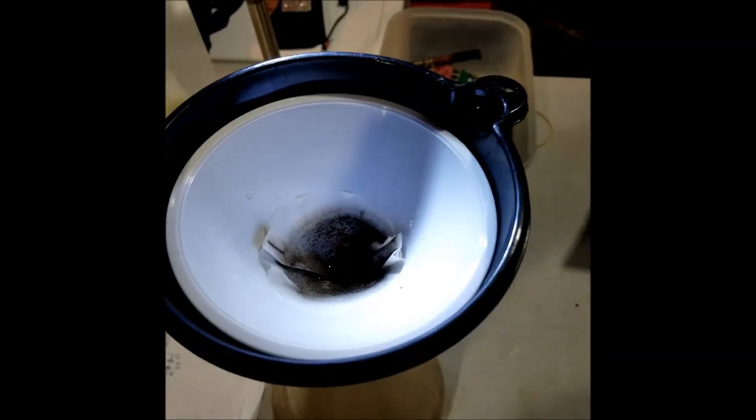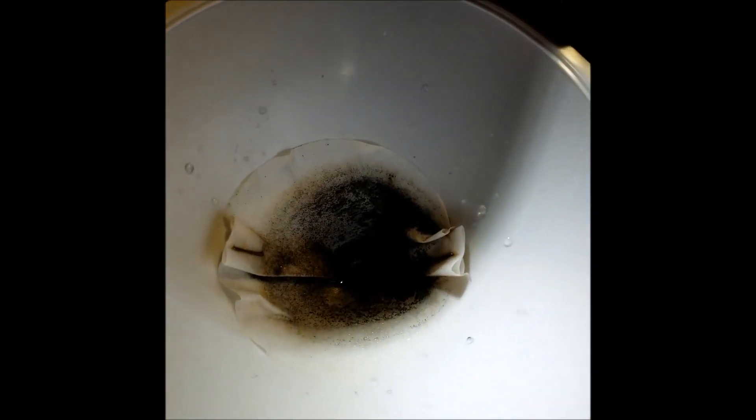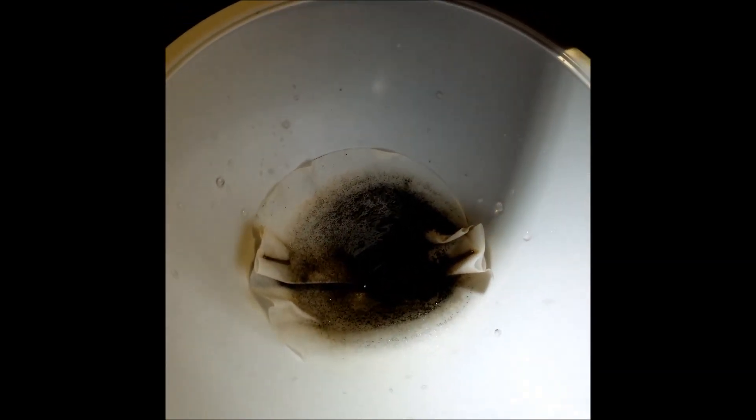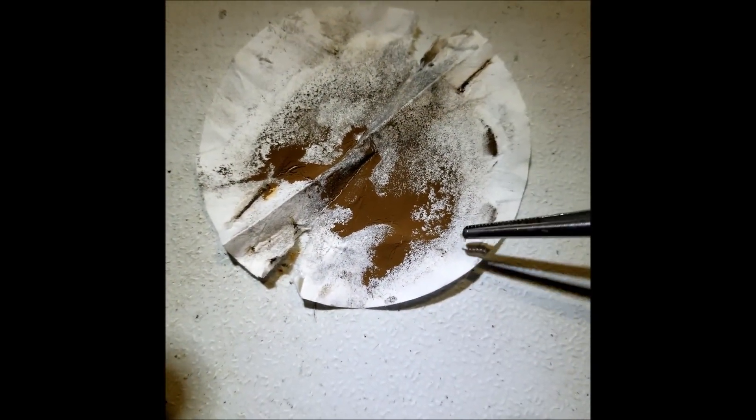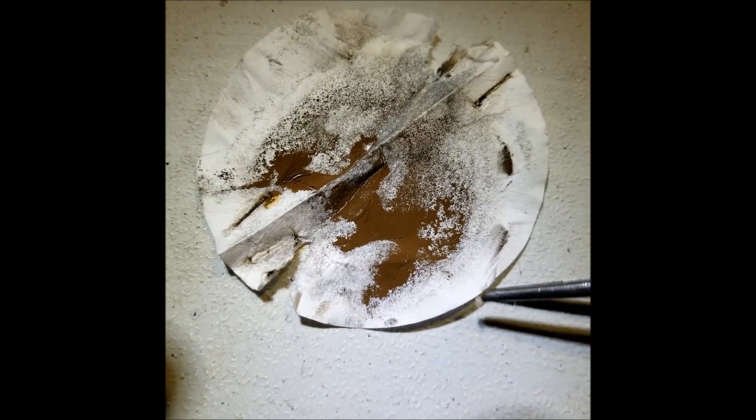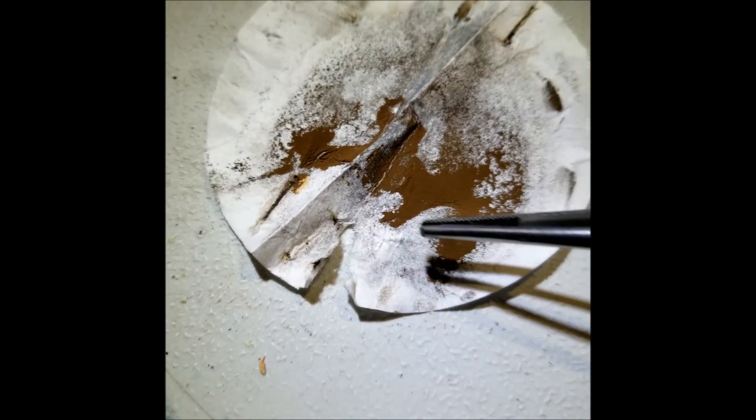So I finished off the filtering. And essentially what you see down there are bits of gold. It's black because of the form it's in right now. And here is the final filter paper with little particles of gold all around it. Just a powder.